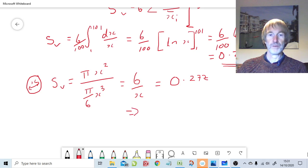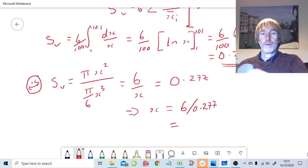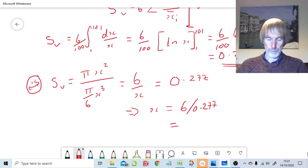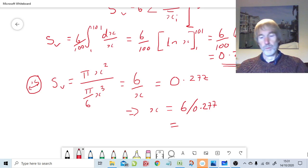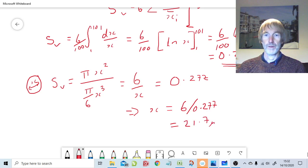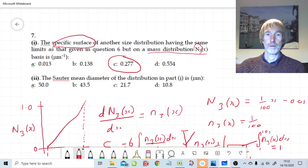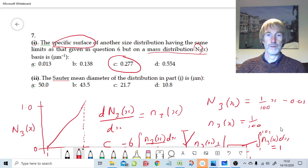So if we rearrange that equation x is equal to 6 over 0.277 which is 6 divided by 0.277, 21.7 microns. So our equivalent spherical diameter is 21.7 and that is also answer number C.